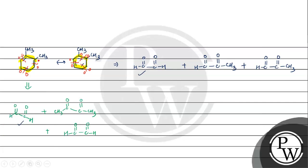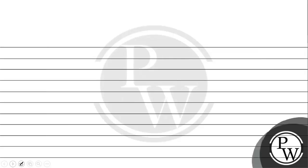This is the correct answer for our question. We asked which pair gives different products on ozonolysis. This pair gives different products. Now we have our options weekly check.